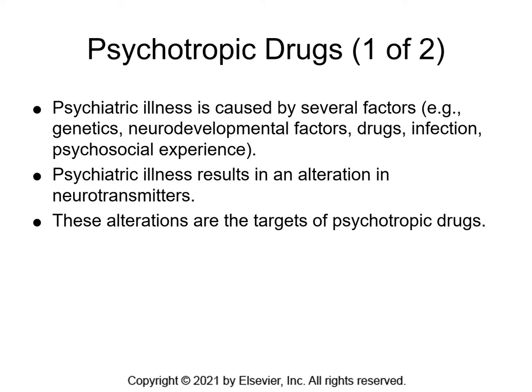The medications we use in psychopharmacology directly affect the central nervous system, the client's behavior, perceptions, thinking, and emotions. These drugs used to treat mental disturbances can provide symptom relief, but they can also interfere with other activities of the brain. Psychiatric illness itself is caused by a multitude of factors, including genetics, neurodevelopmental issues, drugs, infection, and our response to some trauma or abnormal experience.